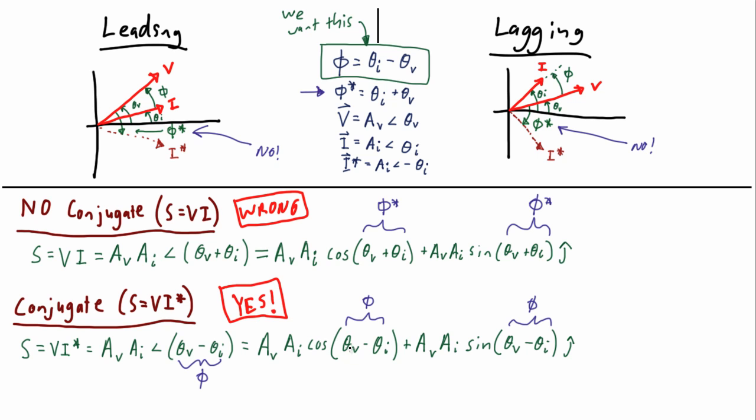If you notice here, we're using θ_V minus θ_I. We're subtracting voltage from current, while above, we did happen to show that it was θ_I minus θ_V.